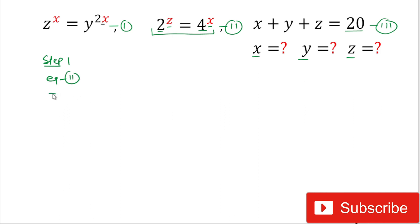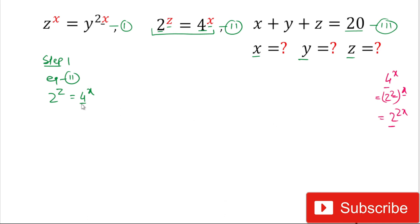Our first step is to start with equation 2: 2 power by z equals 4 power by x. Since 4 is the square of 2, we can write 4 power by x as 2 power by 2x. So we have 2^z equals 2^(2x). Since the bases are the same, we equate the exponents: z equals 2x. Let us call this equation 4.